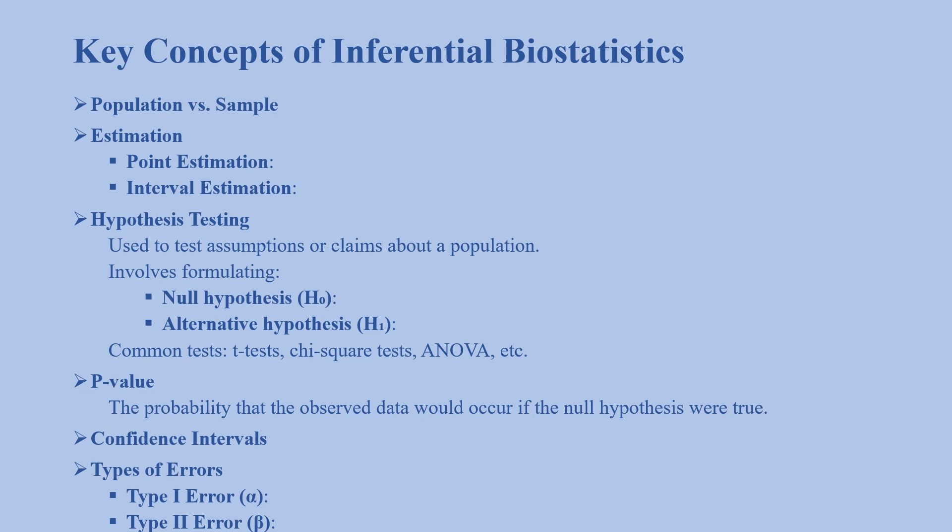The next concept is confidence intervals: a range of values around a sample estimate that is likely to include the true population parameter with a certain level of confidence, like 95% confidence.